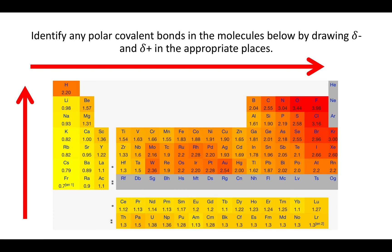Electronegativity also increases as you go up the periodic table, because as you go up, atoms get smaller, so the valence electrons — the outermost electrons — are closer to the nucleus and feel it more. Qualitatively, atoms get more electronegative going up and to the right. Quantitatively, there are numbers given for electronegativity, which you can see on the periodic table shown in this slide.